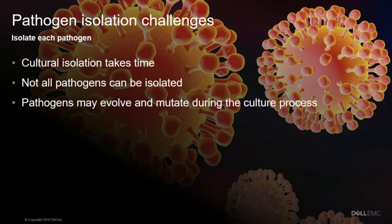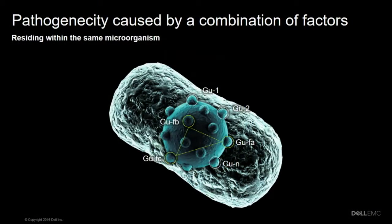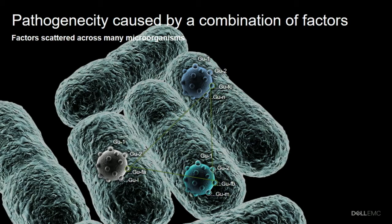While this is a huge scientific breakthrough, it doesn't come without its challenges. Culture may take a long time, not all pathogens can be isolated, and some pathogens can actually evolve and mutate during the culture process. But the biggest challenge is that some diseases are caused by a combination of virulence genes that may be co-located within a single pathogen, but may also be scattered across pathogens within a microbiome, making it almost impossible to spot that combination when pathogens are analyzed in isolation.